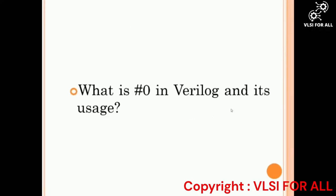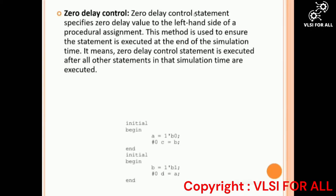Our last question is: what is #0 in Verilog and its uses? #0 is also known as zero delay control. A zero delay control statement specifies a zero delay value to the left-hand side of a procedural assignment. This method is used to ensure the statement is executed at the end of the simulation time step, after all other statements in that simulation time are executed.